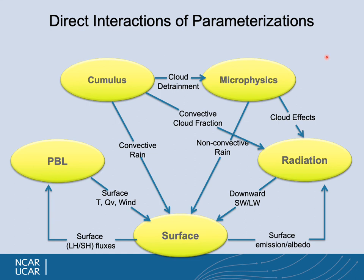This concludes the microphysics talk. We've summarized that microphysics takes cloud detrainment from the cumulus scheme and also produces its own clouds through condensation and species interactions. It provides particle radius information for radiation and provides the non-convective part of the rainfall to the surface.